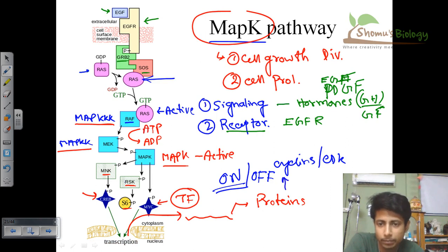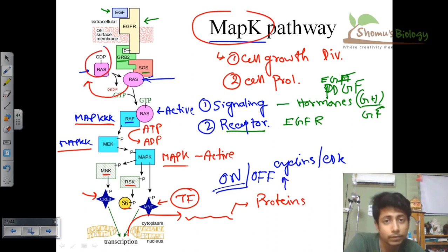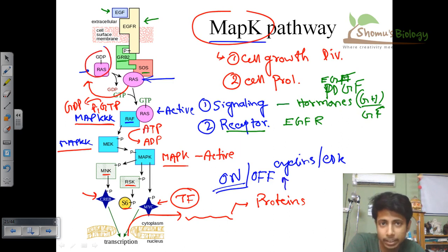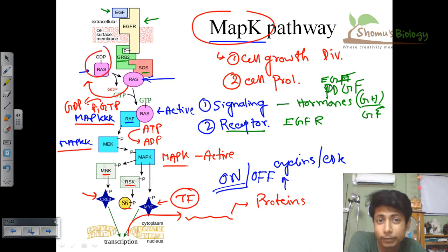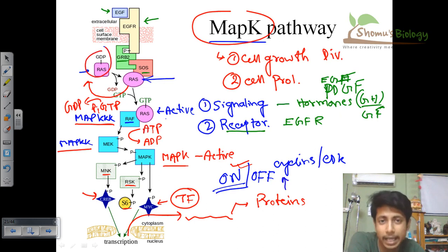This uncontrolled activation occurs when there is a problem with the RAS protein. Normally, after RAS activation, there is a cycle of inactivation that stops the signaling — this happens by hydrolysis of GTP to GDP, releasing inorganic phosphate so RAS becomes GDP-bound and inactive. However, in cases of RAS protein mutation, GTP binds to RAS permanently, preventing reversion to the inactive form. The whole signaling pathway then remains on continuously, converting the cell into a cancerous one — which is how the MAP kinase pathway is related to cancer.